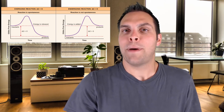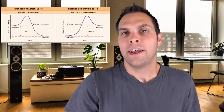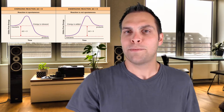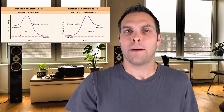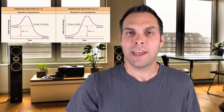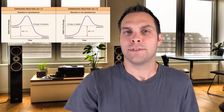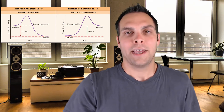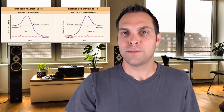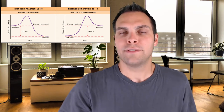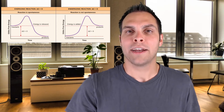Sometimes that coupling is direct and sometimes it's indirect. If you remember our conversation about transport, we have primary active transport — transporters that directly use ATP — and then secondary active transport that uses an electrochemical gradient. In biological systems, the same can be said for other chemical reactions: direct or indirect use of ATP can be used to power endergonic reactions.